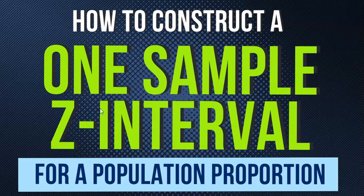So this video is all about a one sample z-interval for a population proportion. Now there are four steps to doing this. Let's walk through those four steps very quickly.